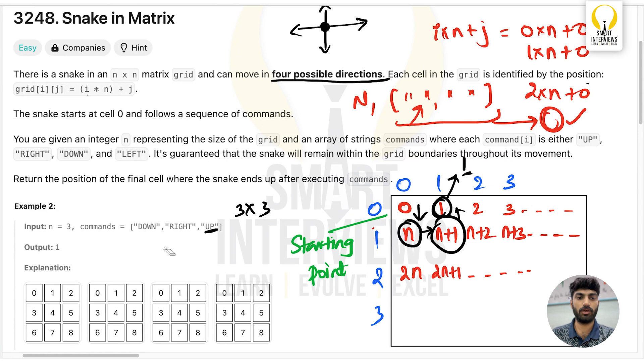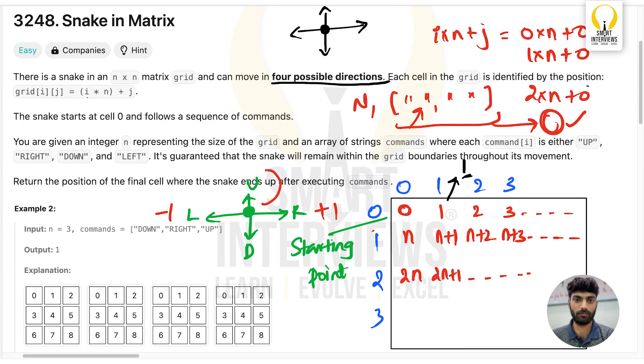The main challenge is: when you're at any particular cell, how will you move right, left, up, or down? Left and right are simple. To go right, just add +1 to the current position. To go left, it's the inverse: subtract 1.